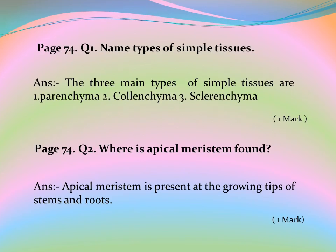Page 74, Question 1: Name the types of simple tissues. Answer: The three main types of simple tissues are parenchyma, colenchyma, and sclerenchyma.